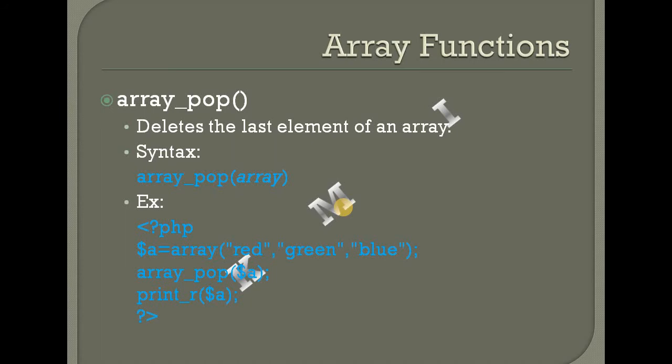Same method, same function. Then array_pop — deletes the last element of an array. The array is automatically deleted. Array pop will remove the last element of an array.